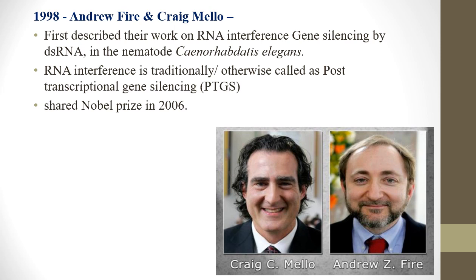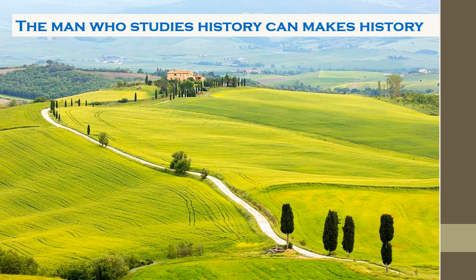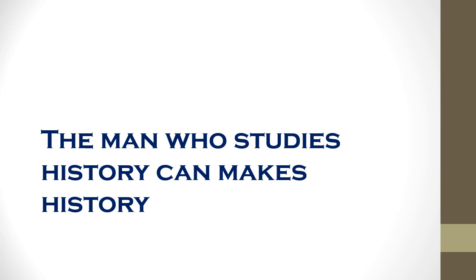RNA interference works by inhibiting translation: double-stranded RNA inhibits the translation process, preventing messenger RNA from being converted into proteins, so no disease occurs when a virus enters the plant cell. In conclusion, only the most important breakthrough contributions have been highlighted here. As the speaker notes: 'The man who studies history can make history.'